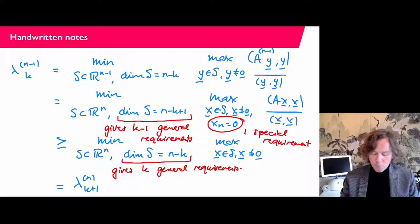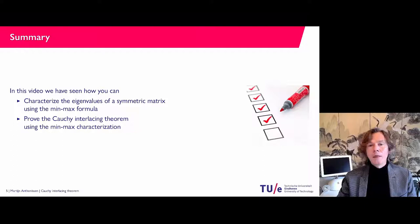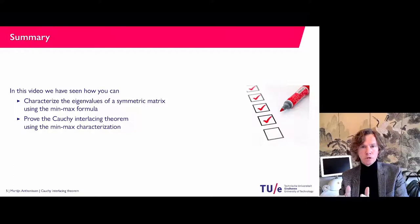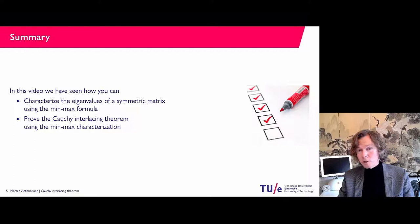So what we have seen in this presentation — which was quite heavy on proofs — is that we can characterize the eigenvalues of a symmetric matrix using the Courant-Fisher min-max formula, and then use this min-max characterization to prove the Cauchy interlacing theorem. That is one of the essential ingredients in spectrum slicing methods for symmetric matrices, where we try to locate eigenvalues by cutting up the real axis into intervals that contain one or more eigenvalues. Thanks for watching, and I hope to see you in the next video.